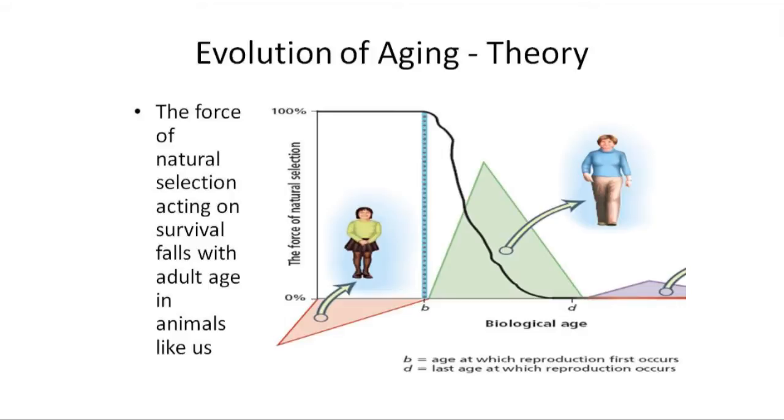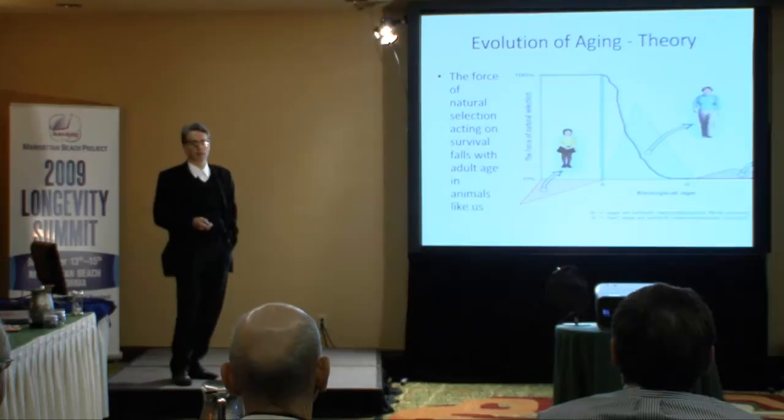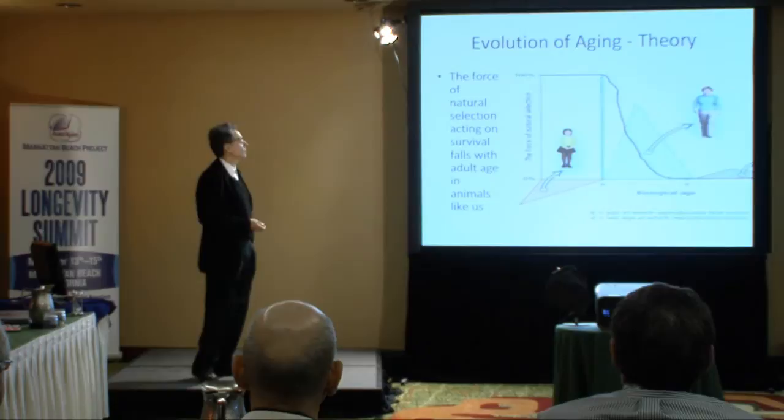Basically, aging is when evolution by natural selection starts to care less, like the long-suffering Rhett Butler vis-à-vis Scarlett O'Hara. And this is not a verbal formula. It is a mathematical result which derives from first principles.